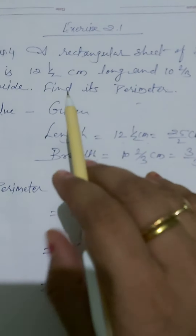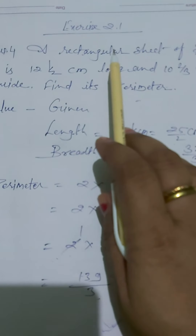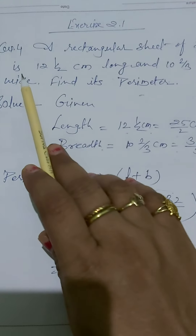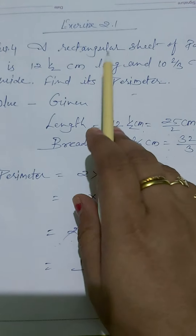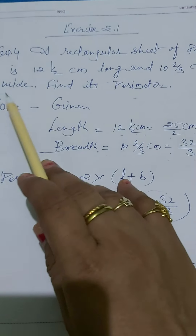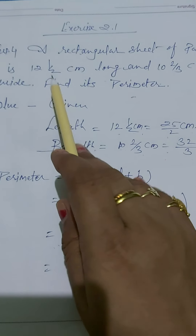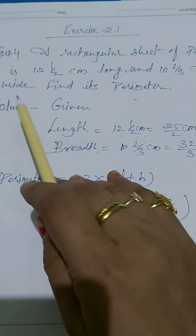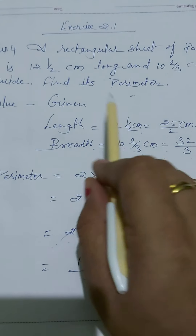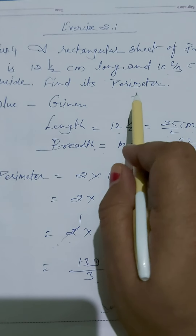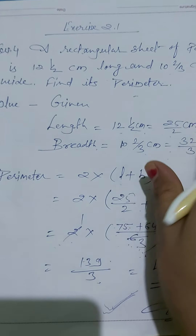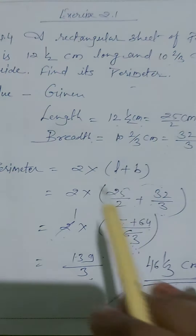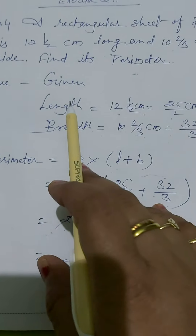Good morning dear students. Here we will see exercise 2.1, question number 4. A rectangular sheet of paper is 12 and 1/2 centimeter long and 10 and 2/3 centimeter wide. We have to find its perimeter.